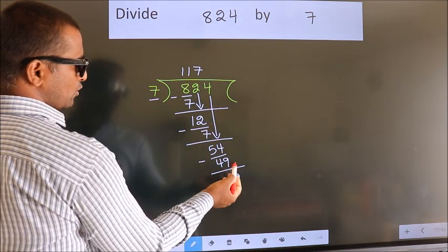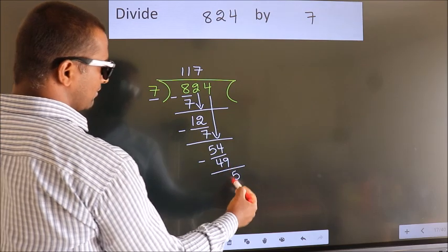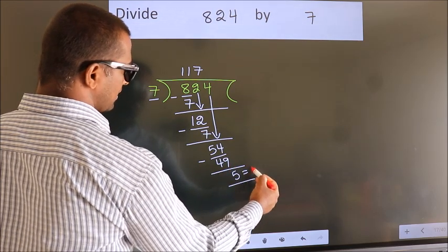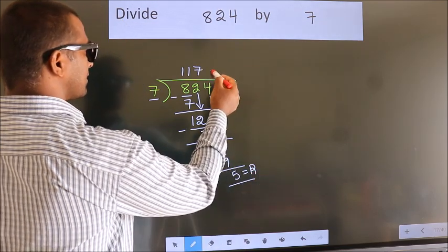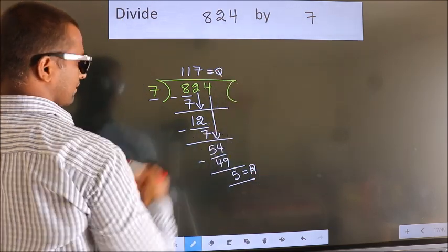No more numbers to bring down. So we stop here. This is our remainder. This is our quotient.